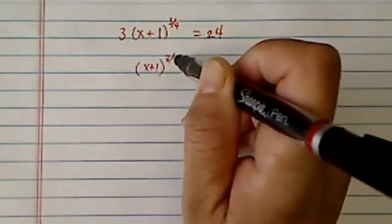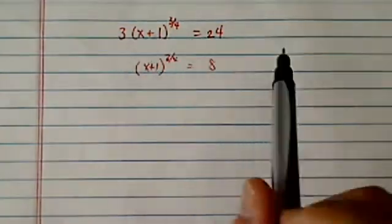Let's clean up first. 3 over 4 is equal to 8. I'll divide by 3 on both sides.